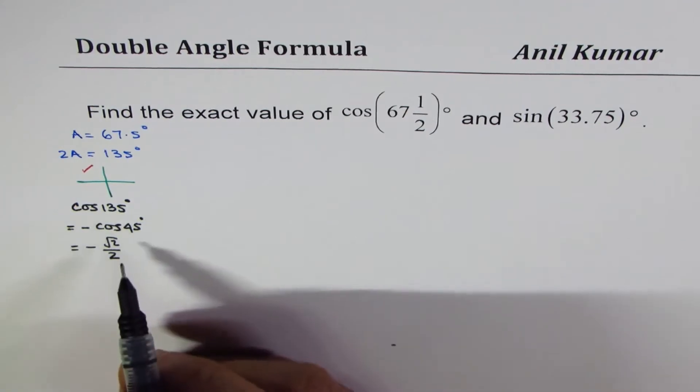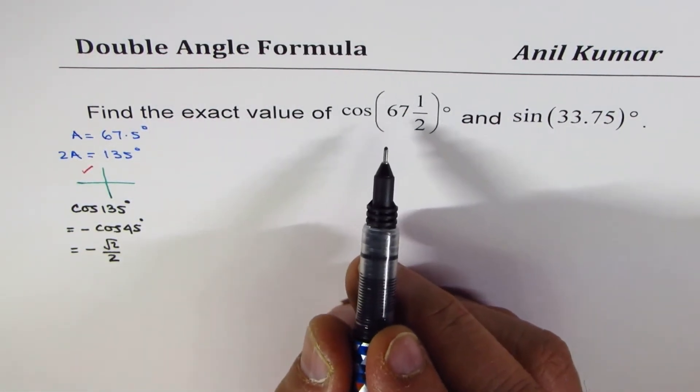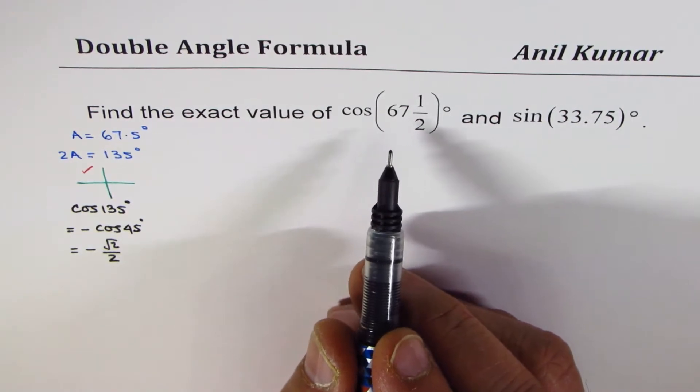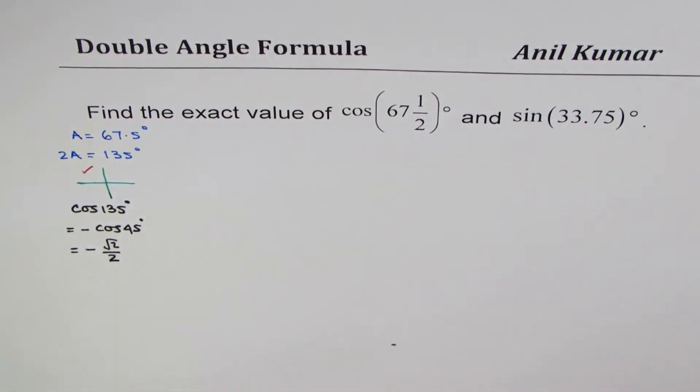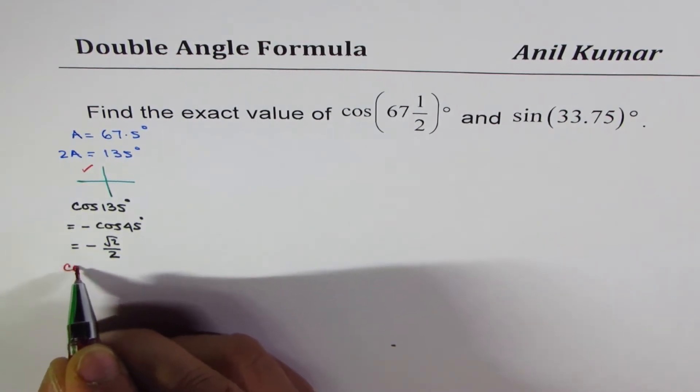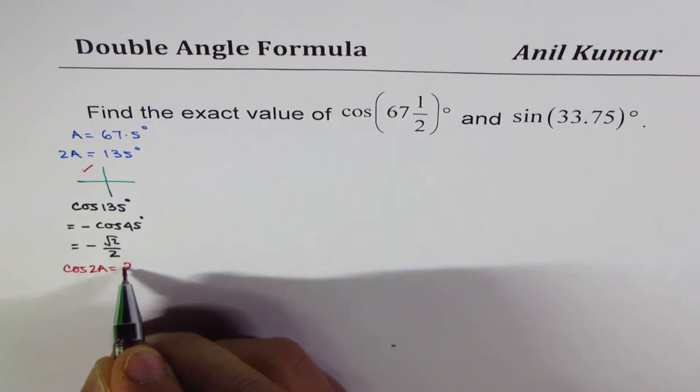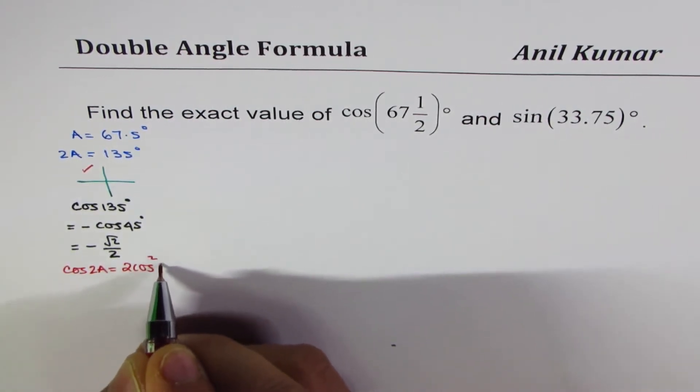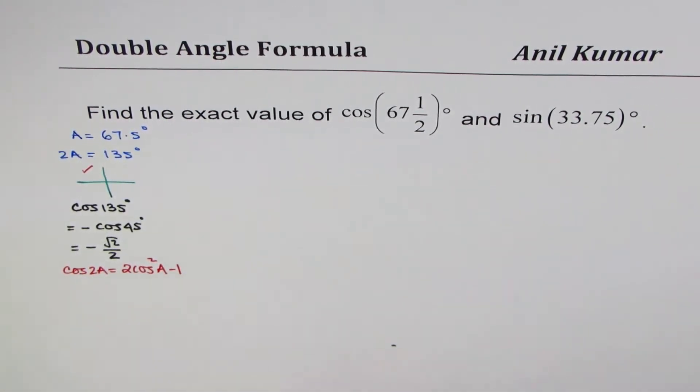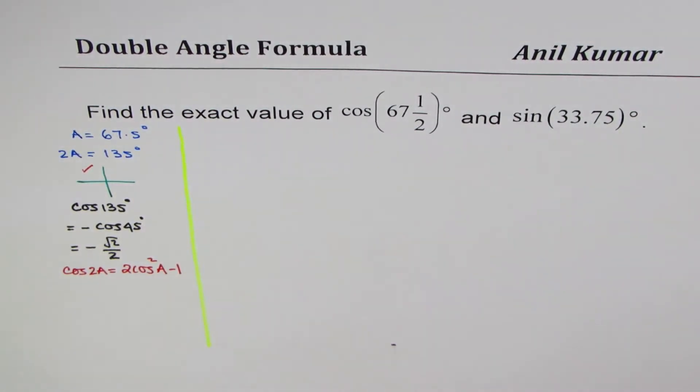Now that should help us to find the solution to this question using double angle formula. To recall, the double angle formula is that cos of 2A could be written as 2 cos square A minus 1. So we'll apply this to find the solution or the exact value required.